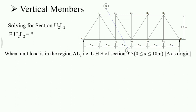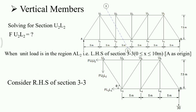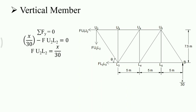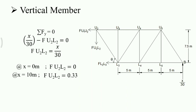The limits are 0 to 10 meters. We cut this vertical member and keep the unit load on the left-hand side of section 3-3. For simplicity, we will consider the right-hand side of section 3-3. We need the vertical force in U2L2. Summation of Fy equals 0: x/30 is going vertically upward and F(U2L2) is vertically downward. So F(U2L2) = x/30. At x = 0, the ordinate is 0; at x = 10 m, the ordinate is 0.33.